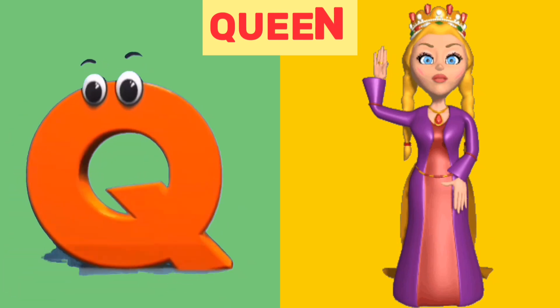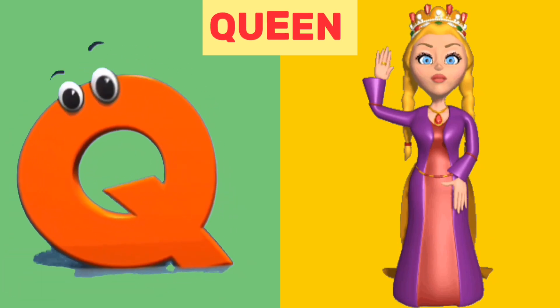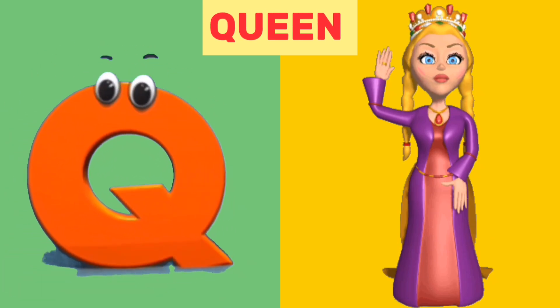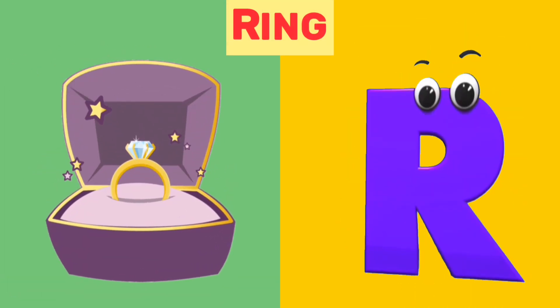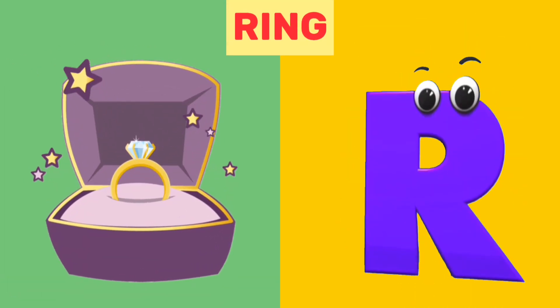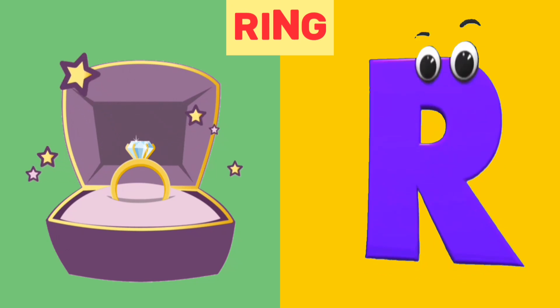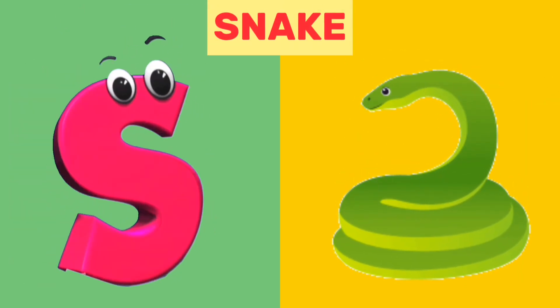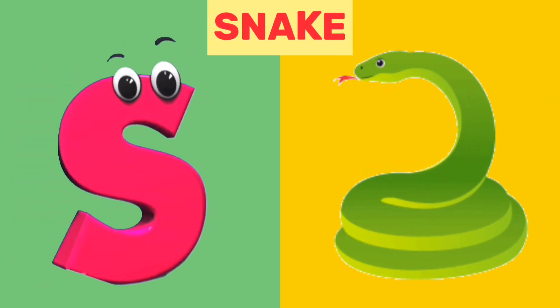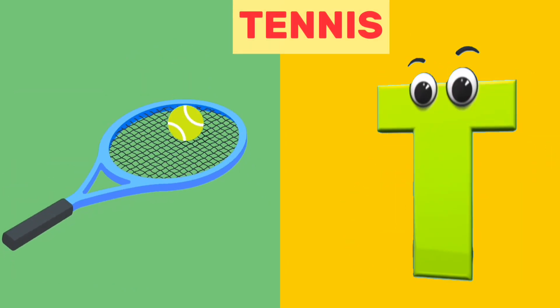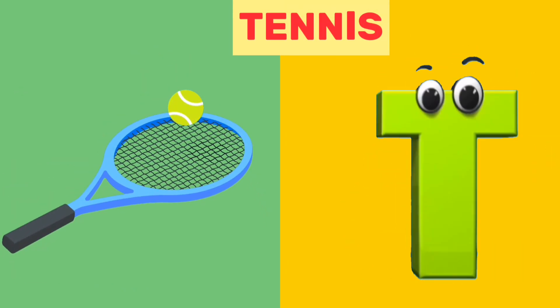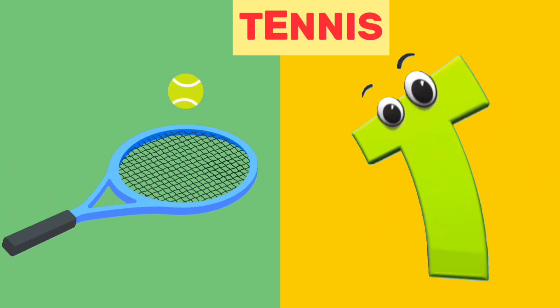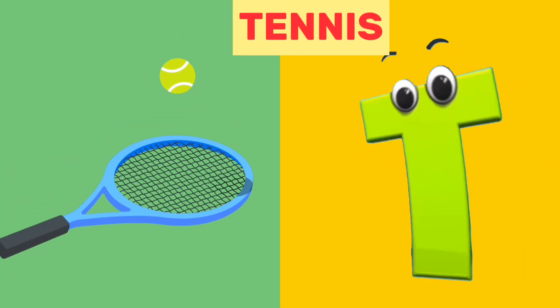Q is for Queen. Qu, Qu. Queen. R is for Ring. R, R. Ring. S is for Snake. S, S. Snake. T is for Tennis. T, T. Tennis.